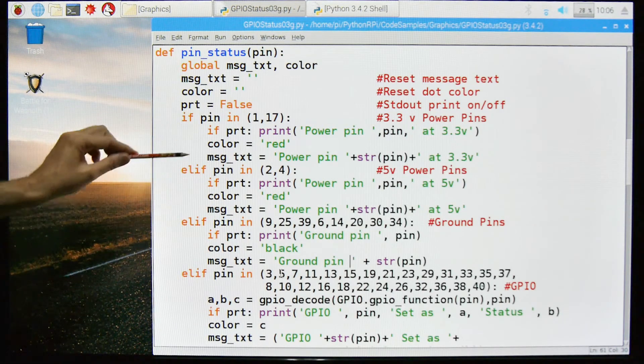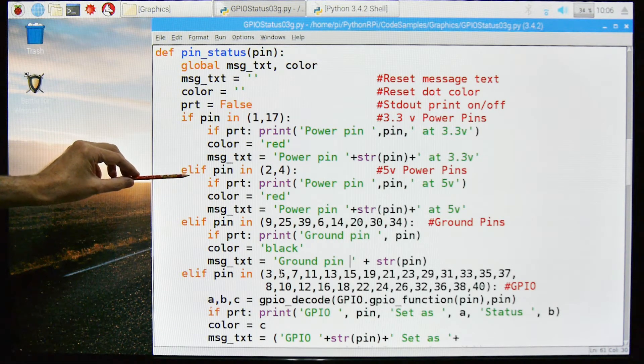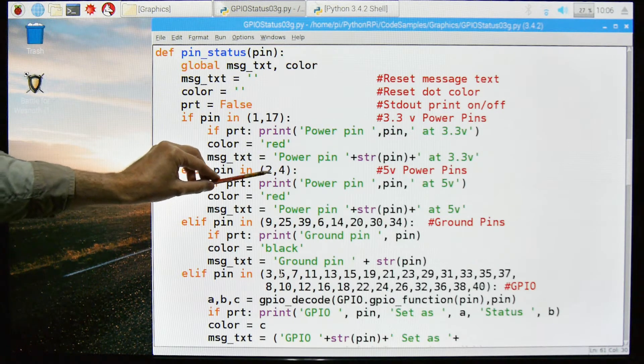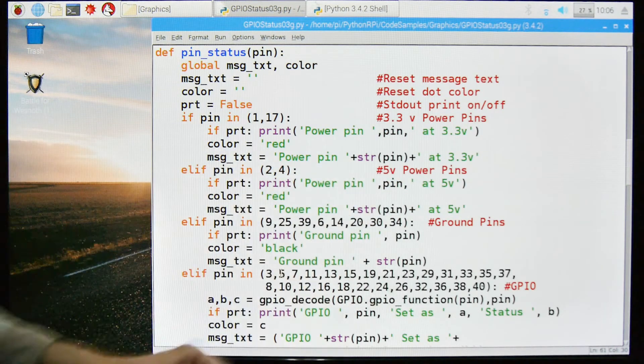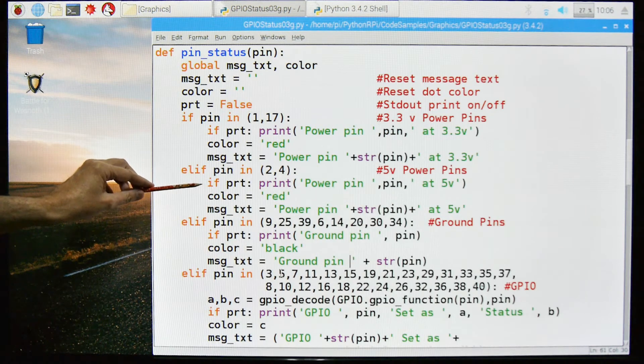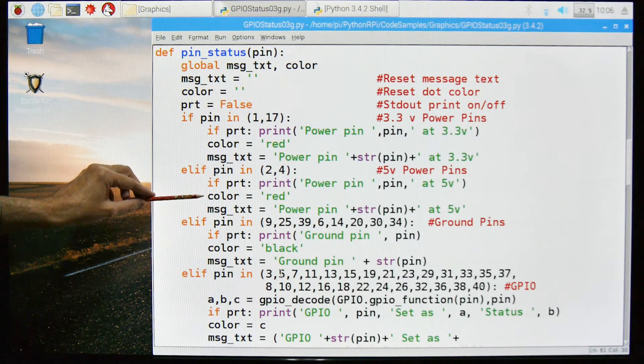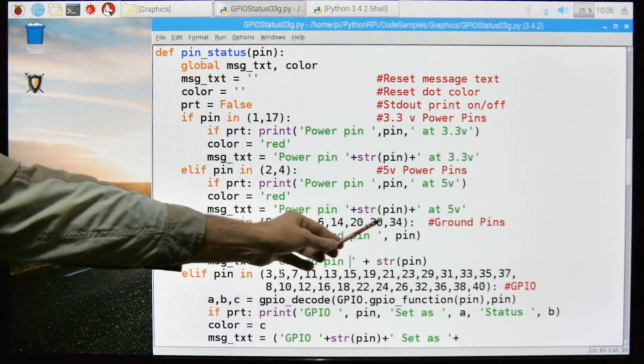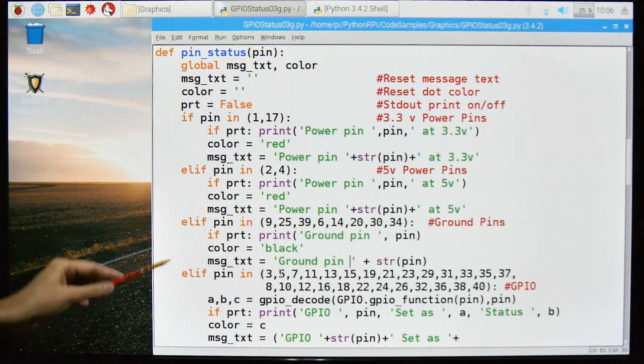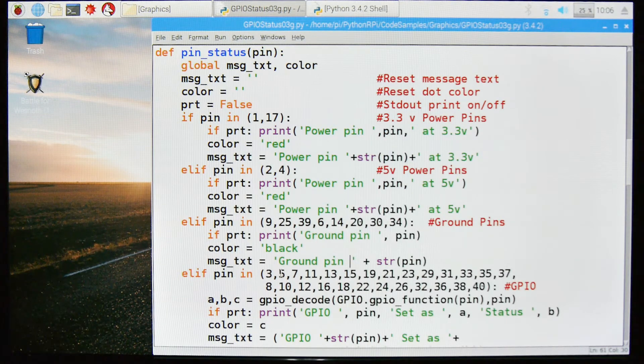And otherwise what will happen is if a PIN is in 2 or 4, that's the 5 volt power PINs, then if this were true I would print that statement and I will always set the color to red and then the message text, power PIN string at 5 volts. Let's scroll down a bit.